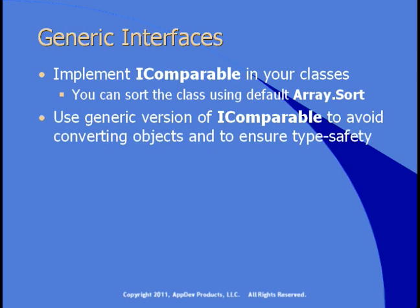The issue is that the basic version of iComparable uses objects, and therefore you have to convert from objects to the specific instances of your class. You can use the generic version of iComparable to avoid this and ensure type safety. The iComparable interface implements a compareTo method.